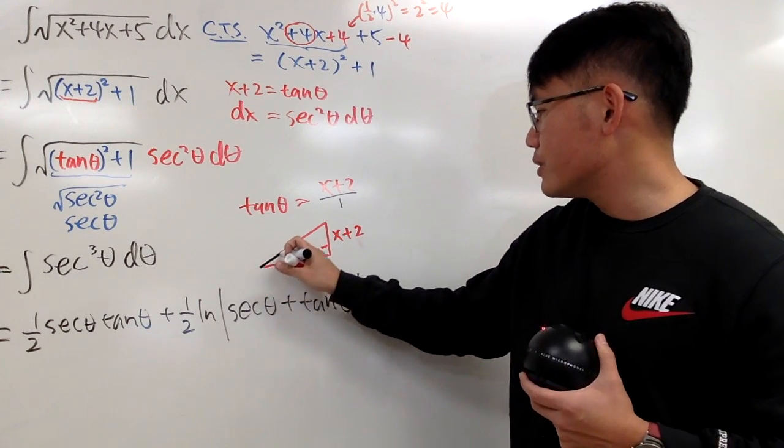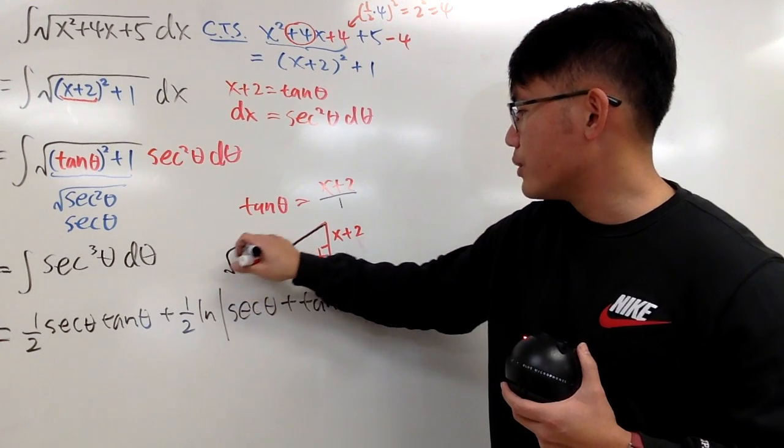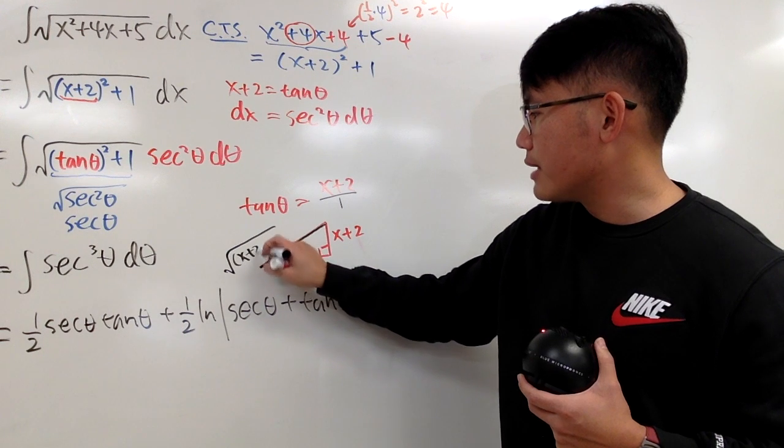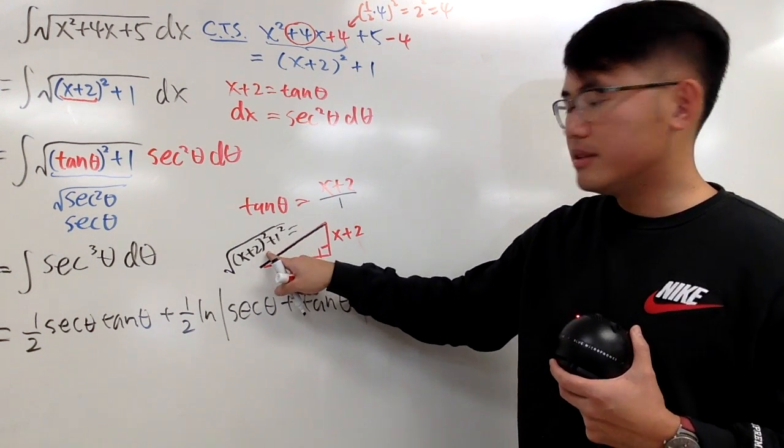And now, we have to figure out the hypotenuse, which is right here. And for this hypotenuse, it's going to be the square root of this square plus that square. So let me write down. x plus 2 square plus 1 square. And doesn't this look familiar?